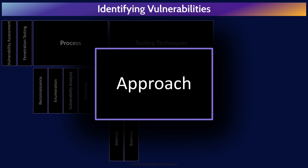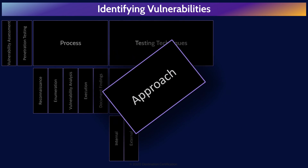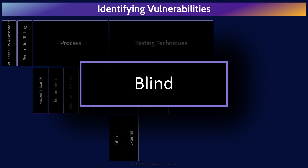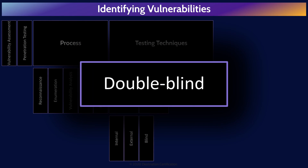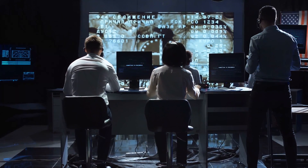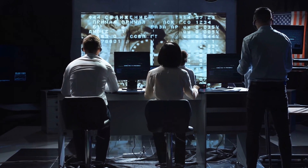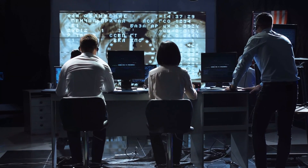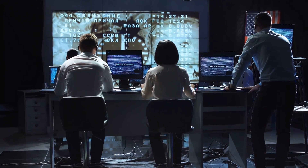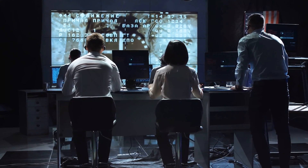There are a couple of major approaches we can use in conducting tests. In a blind test, we give the ethical hacker very limited information on the system to be tested — perhaps just an IP address. The ethical hacker is blind. Double blind means not only do we not give the ethical hacker any information, we also don't tell the organization's security operations team that the hack is occurring. Double blind tests not only what the hacker can get into, but also how effectively the organization can detect and respond to an attack.